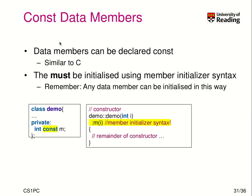Next we have const data members, which is similar to C. I have a class demo here where a private member is declared const. Since it's const, I cannot change it — so how do I initialize it? You can only initialize it in a constructor and only using the member initializer syntax. Here the constructor 'demo' takes an argument 'i' and assigns it to the data member 'm'. After that it's not possible to change it — even inside the constructor body I couldn't write 'm = 5'; that would not work.